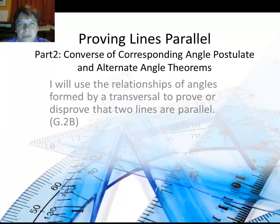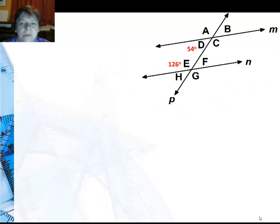We've already shown that if same-side interior angles are supplementary, then the lines that the transversal crosses are parallel. So let's take a look at some of the other angle types.